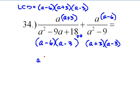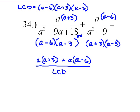So let's step it out. a plus 3 plus a times a minus 6, all over our least common denominator. So what we end up with is a squared plus 3a plus a squared minus 6a over the least common denominator.